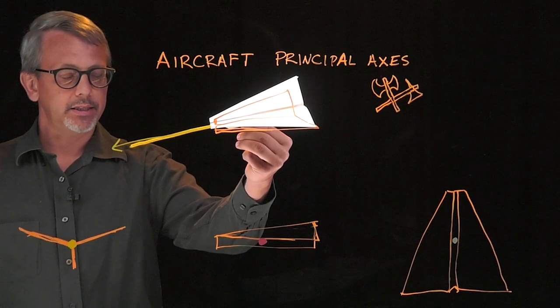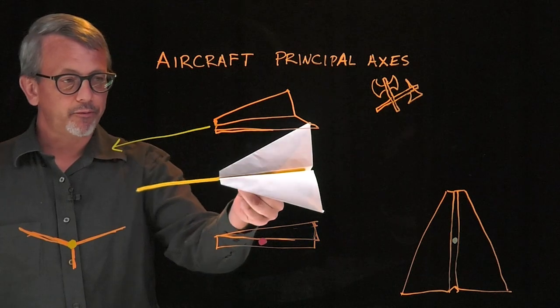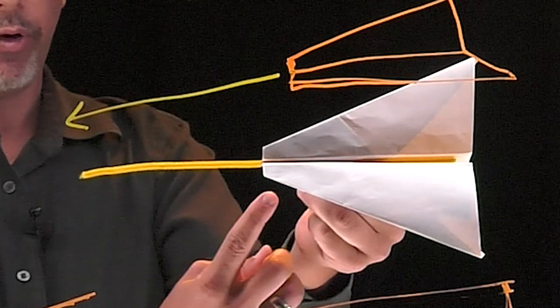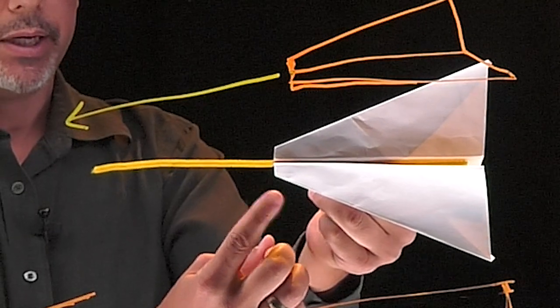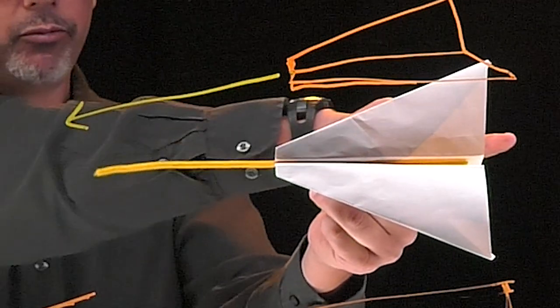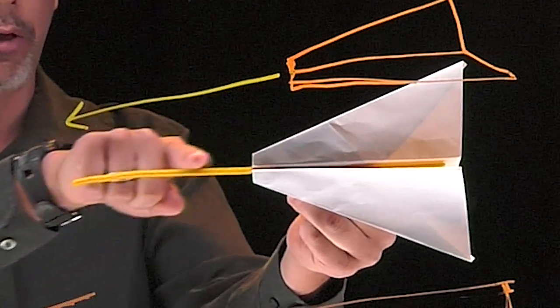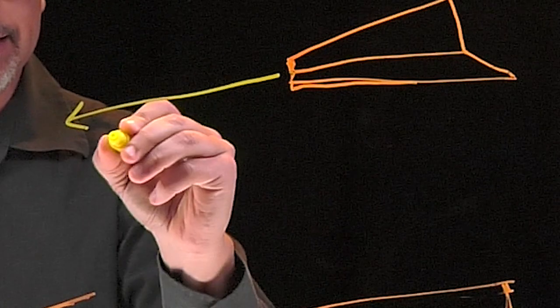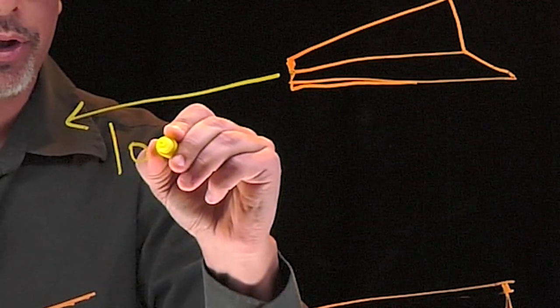The first axis we would like to discuss is the one extending from the back of the plane forward to the front of the plane. This axis has a particular name. You can help remember it by thinking that it runs along the longest part of the plane and this is known as the longitudinal axis.